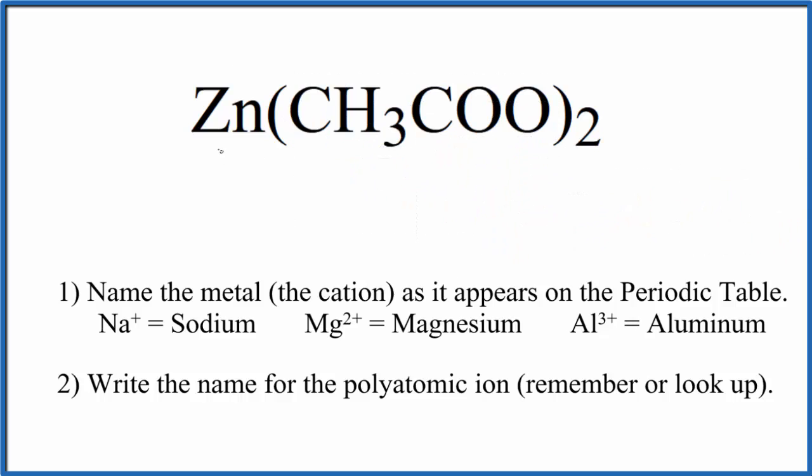Zinc is a transition metal, but it always has an ionic charge of 2+. The acetate ion, this is a group of non-metals, and the whole acetate ion here has a charge of 1-. We have two of them.